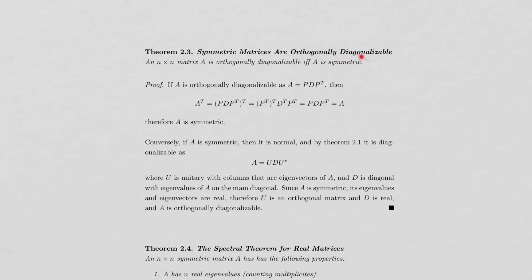Theorem 2.3 states that an n-by-n matrix A is orthogonally diagonalizable if and only if it is symmetric. If A = PDPᵀ with P orthogonal and D diagonal, then Aᵀ = (PDPᵀ)ᵀ = PDPᵀ = A, so A is symmetric. Many textbooks give a long proof, but having Theorem 2.1 available makes this direction straightforward.